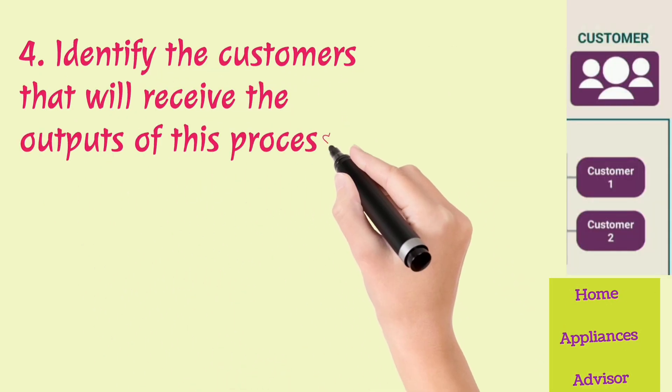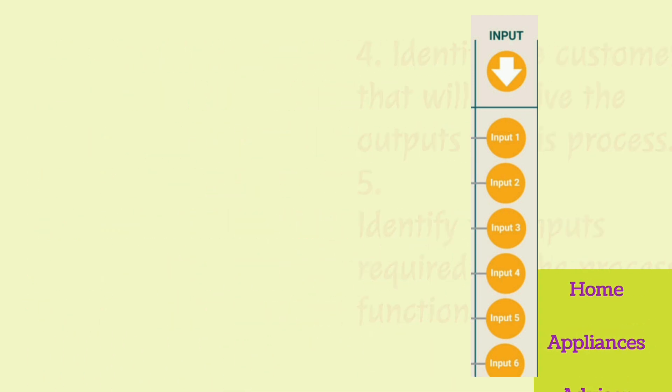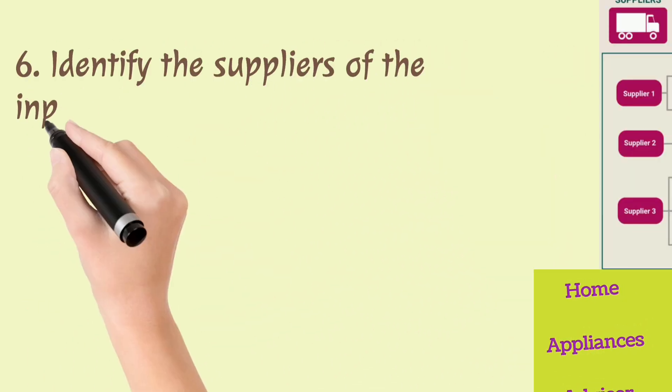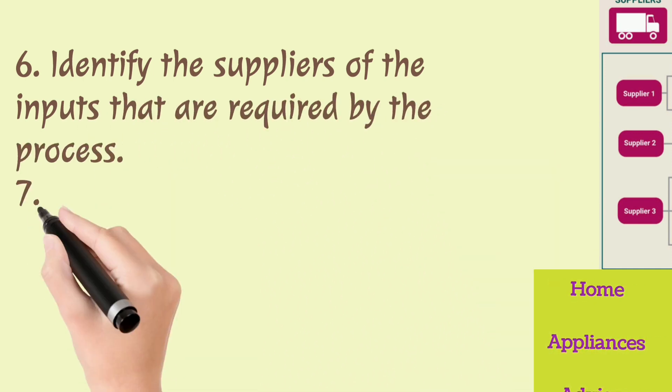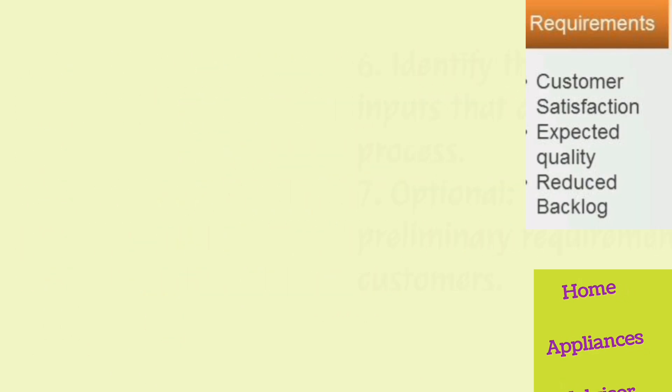Five: Identify the inputs required for the process to function properly. Six: Identify the suppliers of the inputs that are required by the process. Seven (optional): Identify the preliminary requirements of the customers. This will be verified during a later step of the Six Sigma measurement phase.